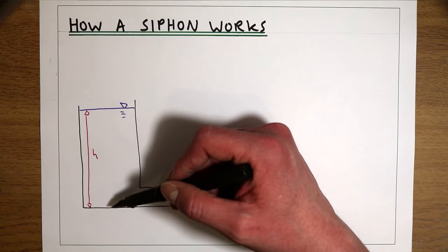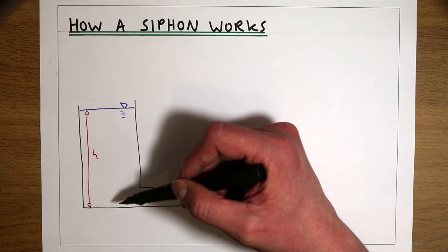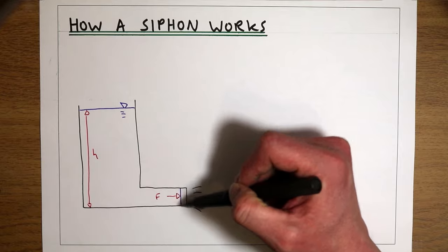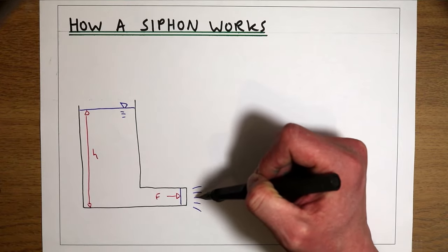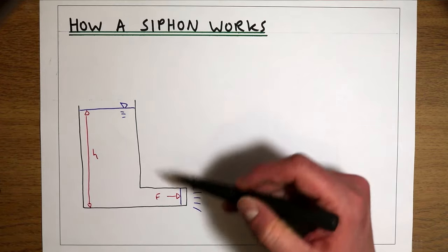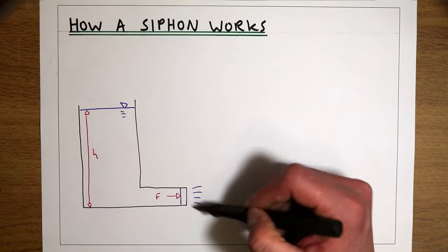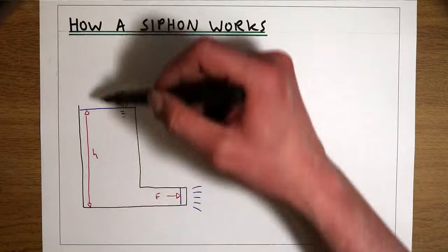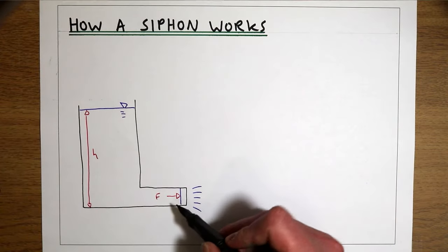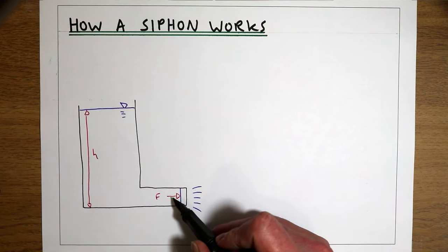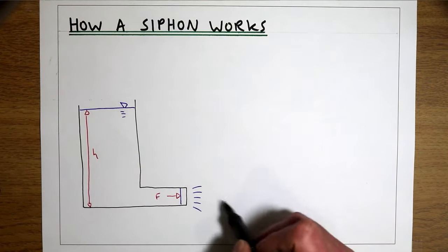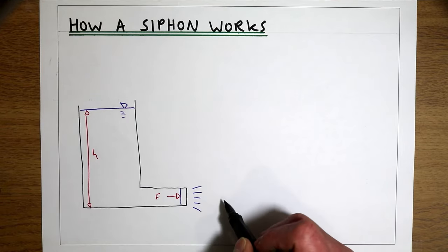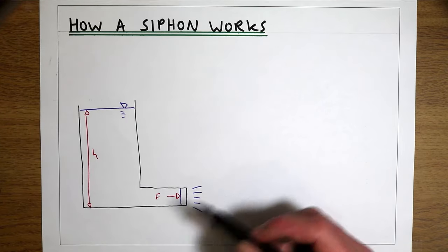So this water is pushing down, giving us a pressure which produces a force pushing this water out. And because it's only touching atmospheric pressure, which is lower than the pressure from this water, it means that we're going to get the water moving in this direction — from an area of high pressure to an area of low pressure.